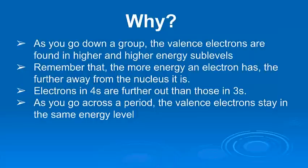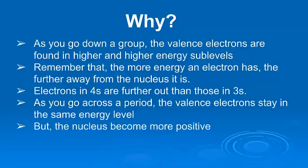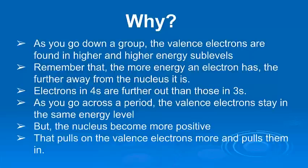is going to get further and further away. But as you go across a period, well, the electrons in the valence shell are in the same energy level. All the way across the second period, from lithium to beryllium and so on, all the electrons are in the second energy level. So they're not moving further away. As a matter of fact, because they're staying in the same energy level, and because as you go across a period, the nucleus becomes more positive. Well, that positive nucleus pulls the valence electrons in even more strongly, and it actually makes the atoms smaller.